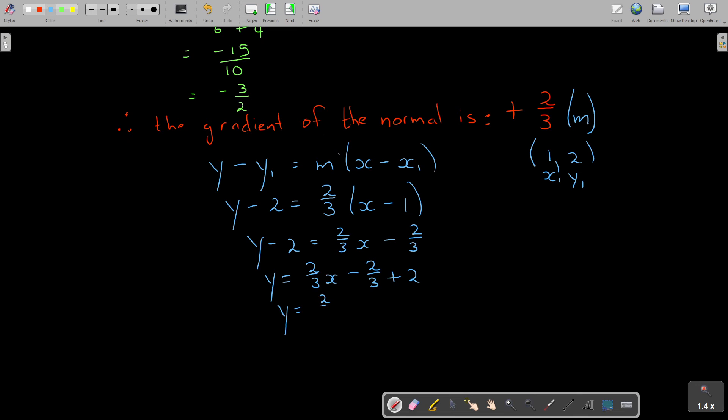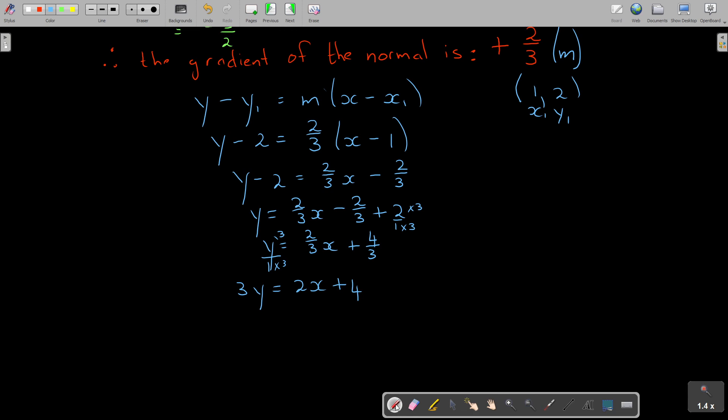It's minus 2 over 3 plus 2. So y equals 2 over 3 x. When you simplify this, you get 4 over 3 because it's 6 minus 2 over 3, which is 4 over 3. To get rid of the denominator, 3y equals 2x plus 4. But always write it in the form they want: first the x, then the y, then the constant.